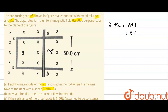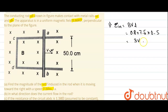The value of B is 0.8, V is 7.5, and L is 0.5. When you calculate this, the induced EMF comes out to be 3 volts.